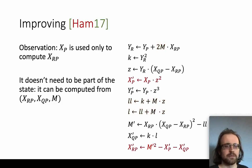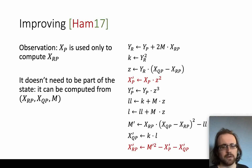The main observation for the new formulas is that xP is only used to compute the next version of itself, xP prime, and xP prime is only used to compute the next xR,P by subtracting xP prime from something. This means xP doesn't have to be part of the state — it can be recovered from the other state variables m, xQ,P, and xR,P.